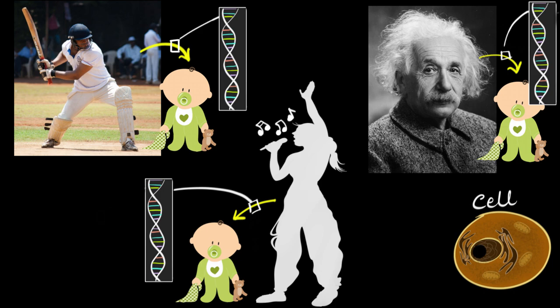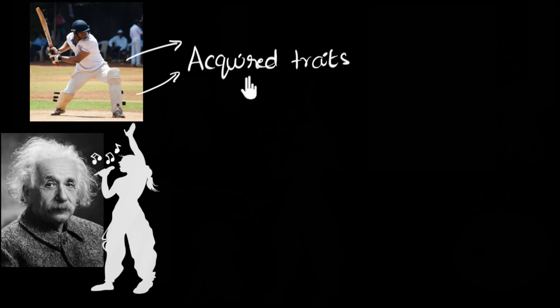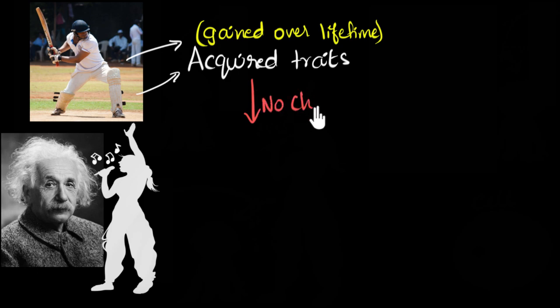And before I talk more, let me just write down what we just spoke. So we said the traits or the knowledge that you acquire over your lifetime, like your batting skills or maybe your thinking ability. In general, these together are called acquired traits. Acquired traits. Makes sense, right? Because you're acquiring them. You didn't inherit them from your father or mother, but you're acquiring them in your lifetime through practice. So acquired traits are basically the traits that you gained over lifetime. And what we learned about these acquired traits, we saw that they cause no change. They cause absolutely no change in the DNA. No change in the DNA.